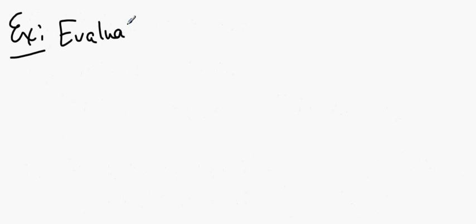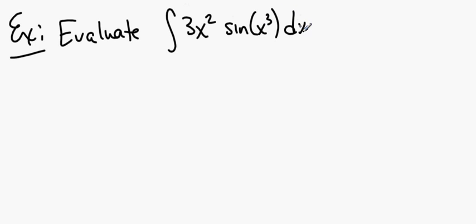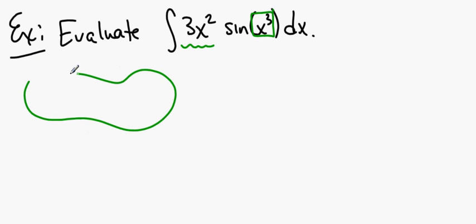Let's evaluate the indefinite integral of 3x² times the sine of x³ dx. By evaluate, we mean we're looking for all possible anti-derivatives of 3x² sine of x³. Our thought is that the derivative of x³ is hanging out over here, and that makes our choice very straightforward. Over here in Scrapland, we're going to say that u is going to be x³. We'll let u be x³.